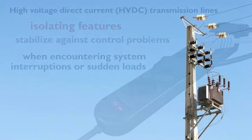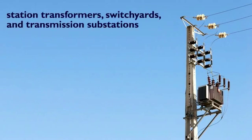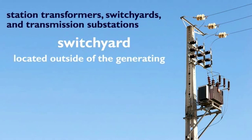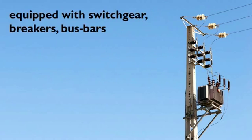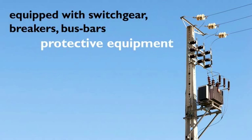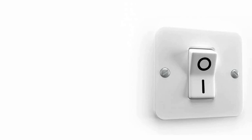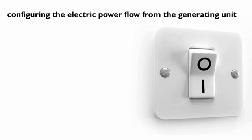Besides the actual transmission lines, the transmission system consists of station transformers, switch yards, and transmission substations. The switch yard is typically located outside of the generating unit and provides a station transformer that increases the power voltage from the unit voltage to the transmission system voltage. The switch yard is also equipped with switchgear, breakers, bus bars, as well as protective equipment. This switch yard equipment is used in configuring the electric power flow from the generating unit, as well as protecting the unit and transmission grid.